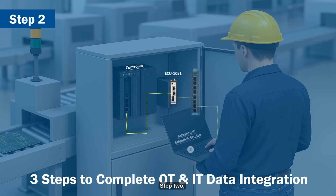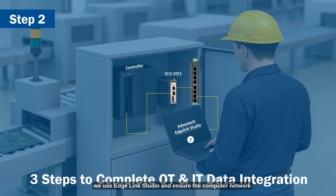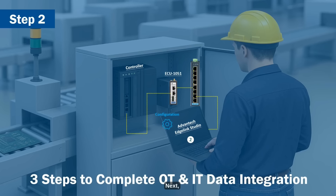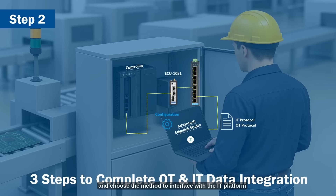Step 2: We use EdgeLink Studio and ensure the computer network can connect to the ECU gateway. Next, set up the type of equipment and parameters to be read, and choose the method to interface with the IT platform, such as MQTT, OPC UA, or ODBC.